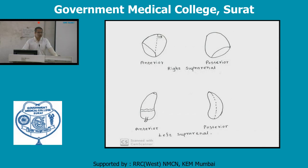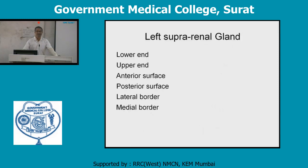Now for the left suprarenal gland: it is semilunar in shape and shows a pointed upper end and a rounded lower end. It lies in relation with the upper aspect of the left kidney.